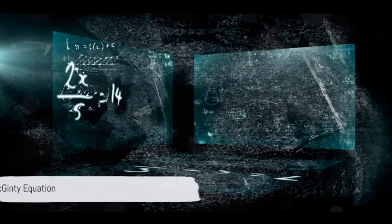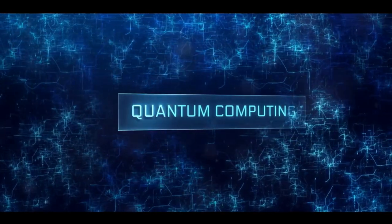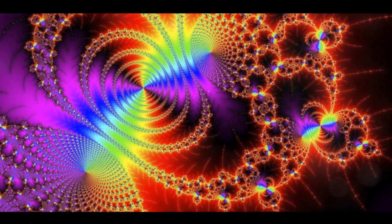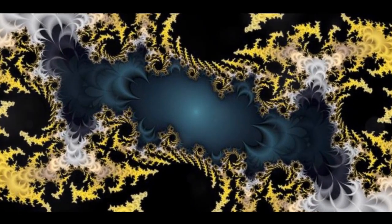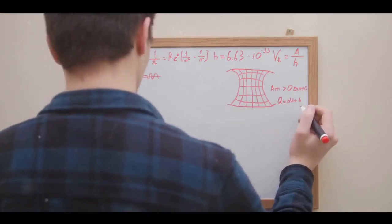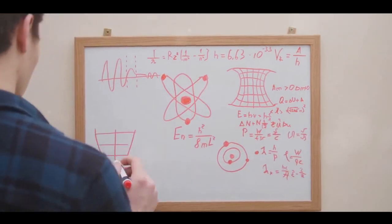With the stage set, we delve into the McGinty equation. This equation is a masterful blend of quantum field theory and fractal geometry. It incorporates the wave function of QFT and the fractal correction term from fractal geometry. The derivation of the equation is a delicate dance of integral calculus, Laplace transform, and the convolution theorem.